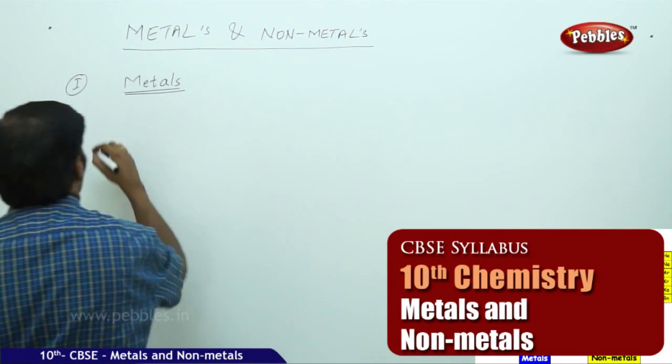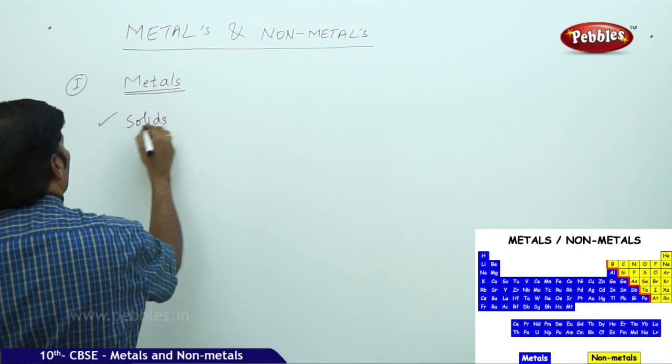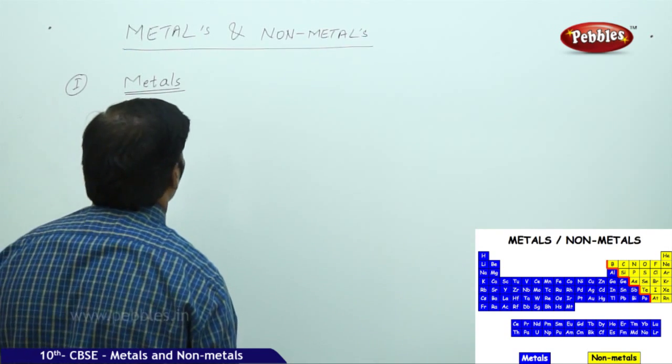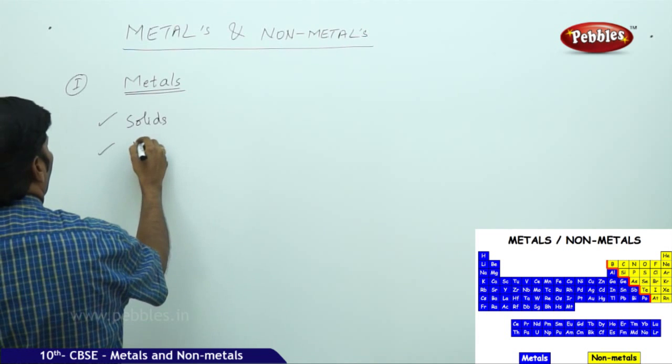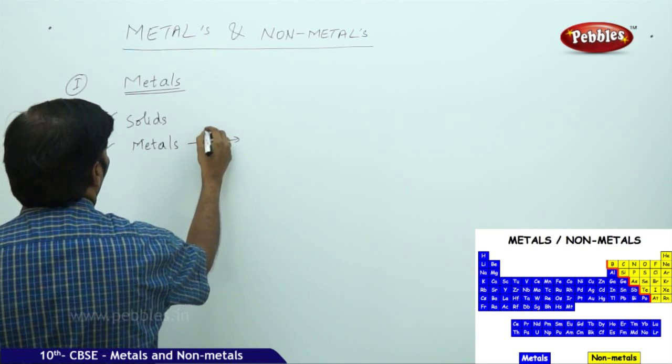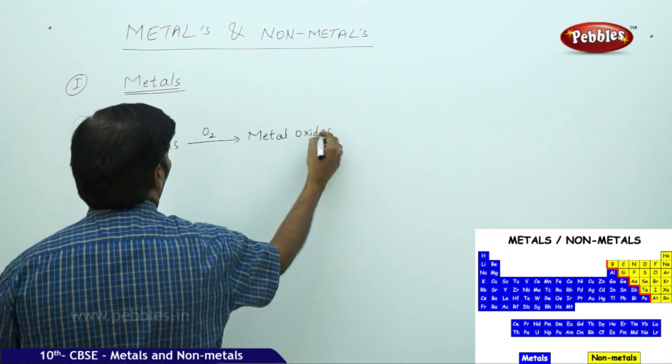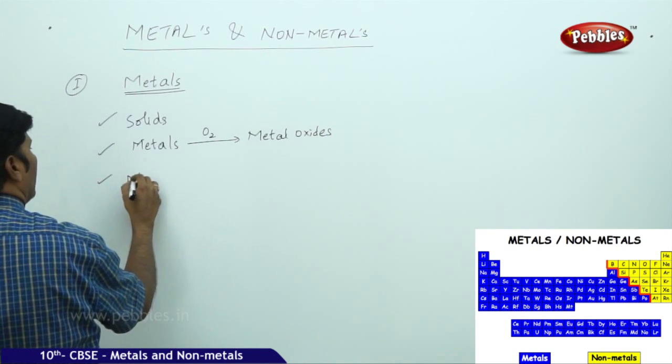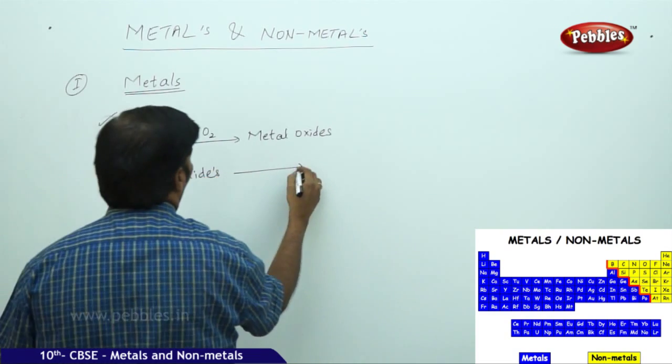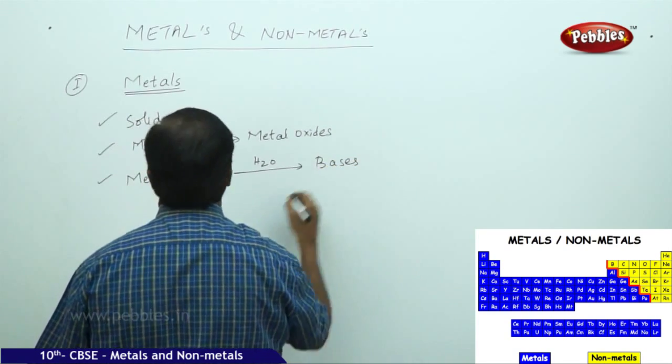We take metals - all metals are solids. These metals, when they react with oxygen, they form metal oxides. And metal oxides, when they are hydrolyzed, they give bases.